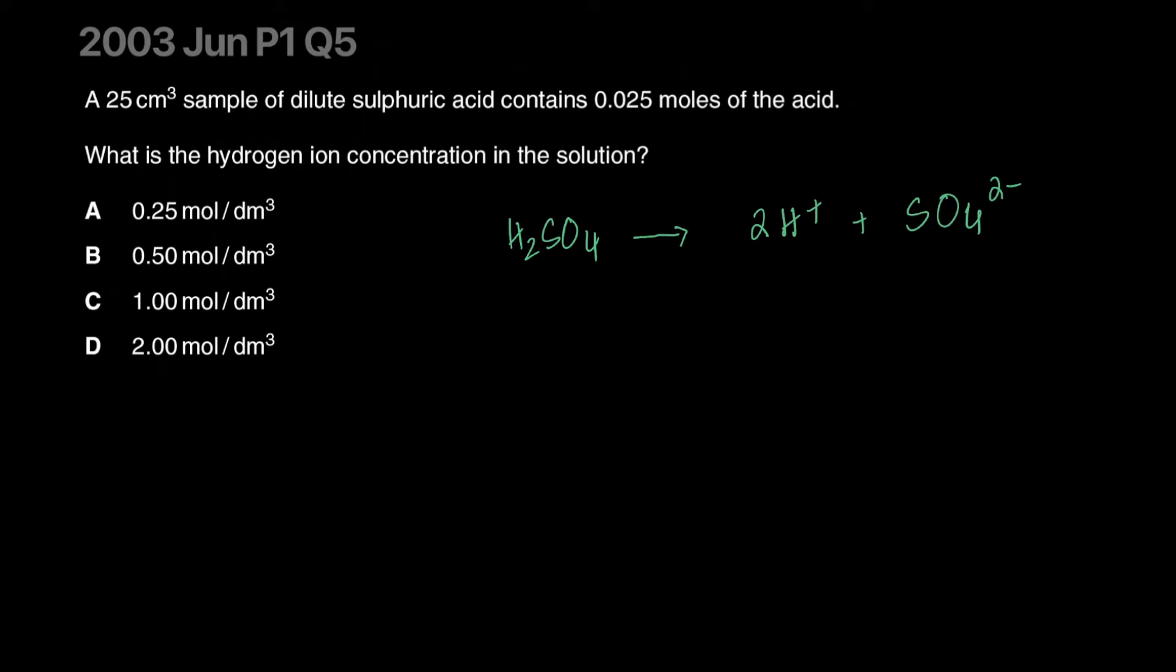Because that's essentially what it's made of. So if you have one sulfuric acid molecule, you'll produce two ions. If you have 0.025 moles worth of it, you'll produce 0.05 moles of hydrogen ions. So what is the concentration? Concentration will be 0.05 divided by 25 centimeter cube in decimeter cube. The answer is 2 moles per decimeter cube. The answer is D.